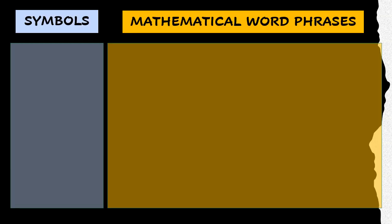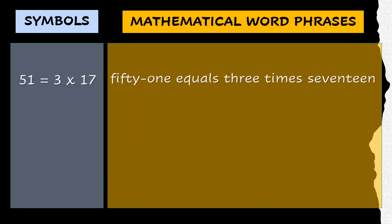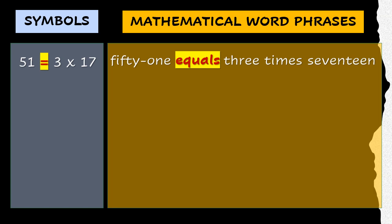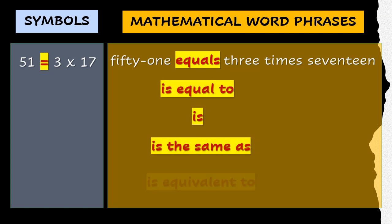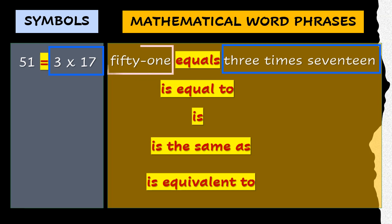Aside from word phrases, mathematical sentences can be translated to equations. The equal sign can be read as equals, is equal to, is, is the same as, or is equivalent to. Whenever you see any of these signal words for the equal sign, the phrase after any of these word phrases becomes the second part of the equation, and anything that precedes it is the first part of the equation.